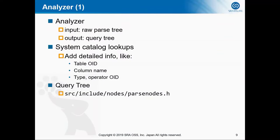Next, let's have a look at the analyzer. As I mentioned, the parser doesn't do any lookups in the system catalog, but the analyzer will access the system catalog and add detailed information to the parse tree, like table OID, column name, type, or operator OID. The output of the analyzer is a query tree. You can find all the query tree node definitions in the parsenodes.h header file.